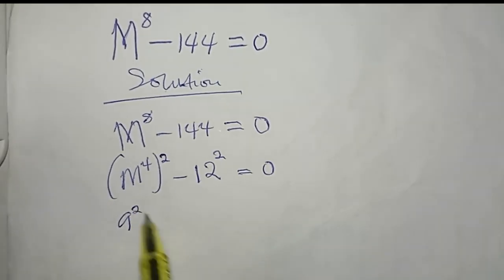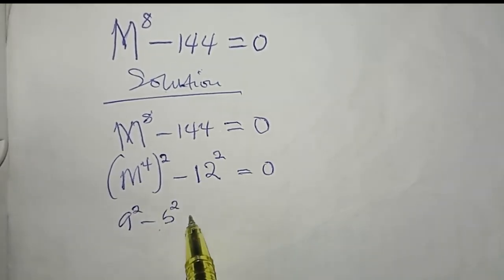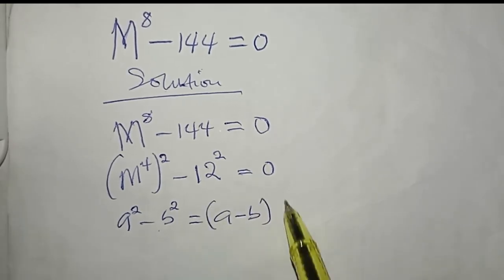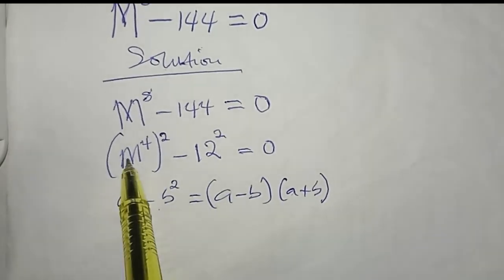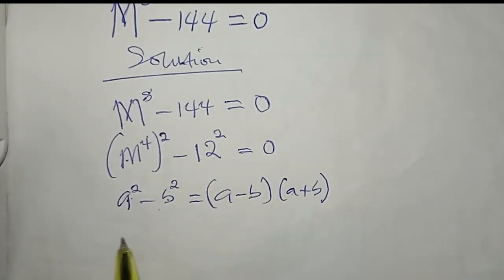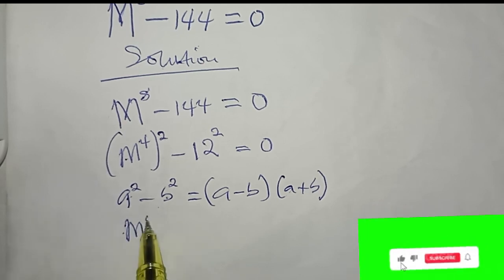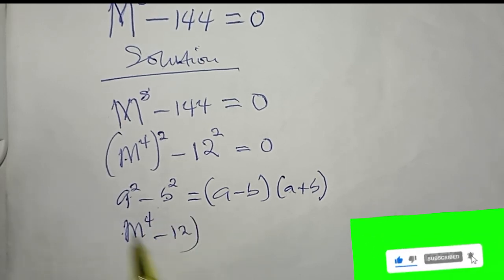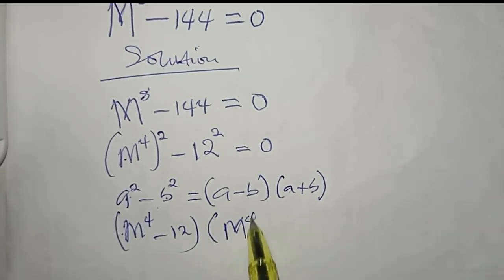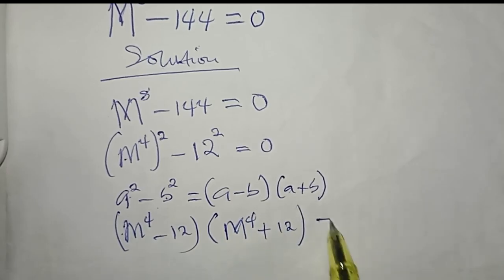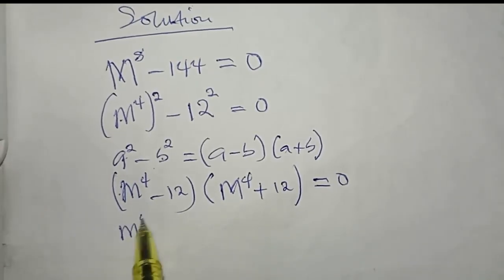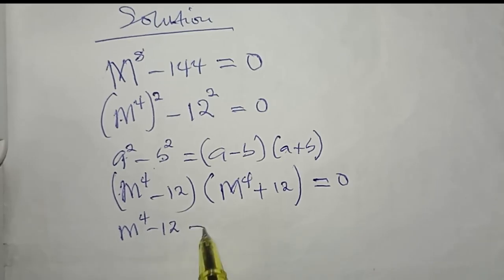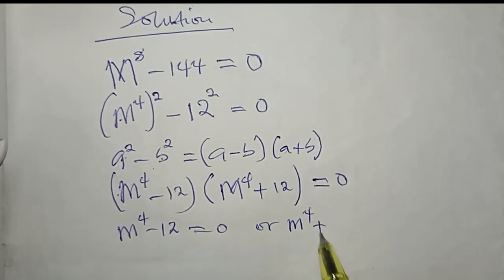Recall that if you have a squared minus b squared, you can expand this to (a minus b) multiplied by (a plus b). So using that rule here, a is equal to m power four and b is equal to 12. This changes to (m power four minus 12) multiplied by (m power four plus 12) equals zero. Using the zero product rule, m power four minus 12 equals zero, or m power four plus 12 equals zero.